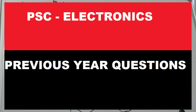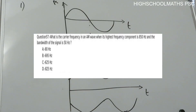Hi all, this is me and welcome back to our channel. In this video we will discuss previous electronics questions. The first question: what is the carrier frequency in an AM wave when its higher frequency component is 850 Hz and the bandwidth of the signal is 50 Hz? Options are: 80 Hz, 695 Hz, 625 Hz, or 825 Hz.